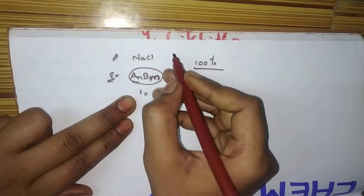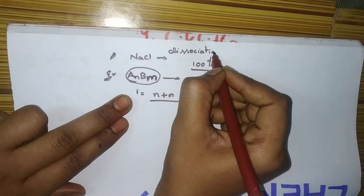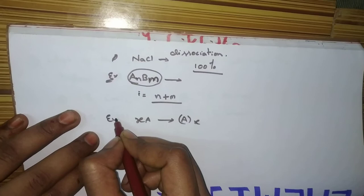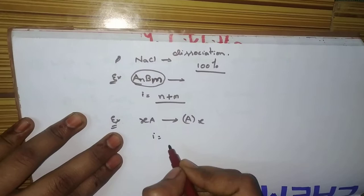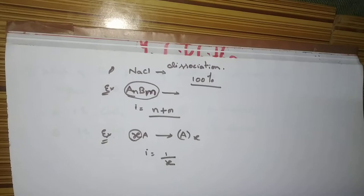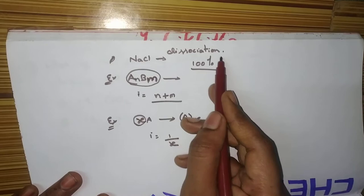This undergoes dissociation. Suppose, X A will associate to A_X. Here also, I will give examples. You don't need to worry. Here, i value will be 1 upon X. Take X coefficient. That's it. You have done the trick and you are going to solve all the problems in an easy manner. Again, remember this. This is only for 100% dissociation.